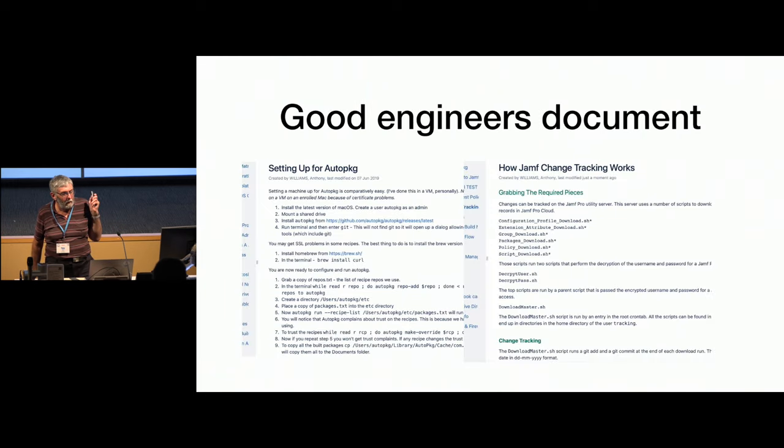By the same token, good engineers document, document everything for the same reason. How a system is set up, how it works, write it all down. You can see here on the screen, on the left, are instructions for how to set up a Mac to run auto-package in my current organisation. And it gives you all the steps required from a bare Mac to being able to run auto-package on that Mac, including where to get the recipes, where to get the list of packages, where to get the list of repos to add. That's all included in the document. And on the right-hand side is a Confluence page that describes how the Jamf change tracking that I've just talked about works, what it does, the components of it.